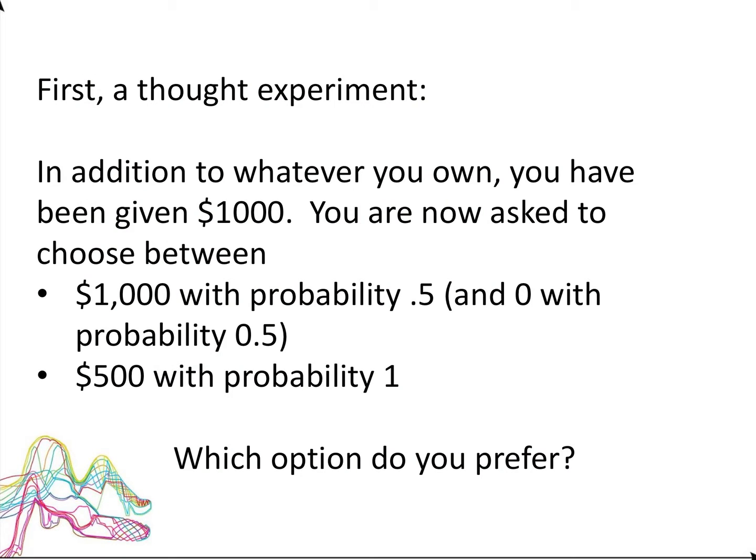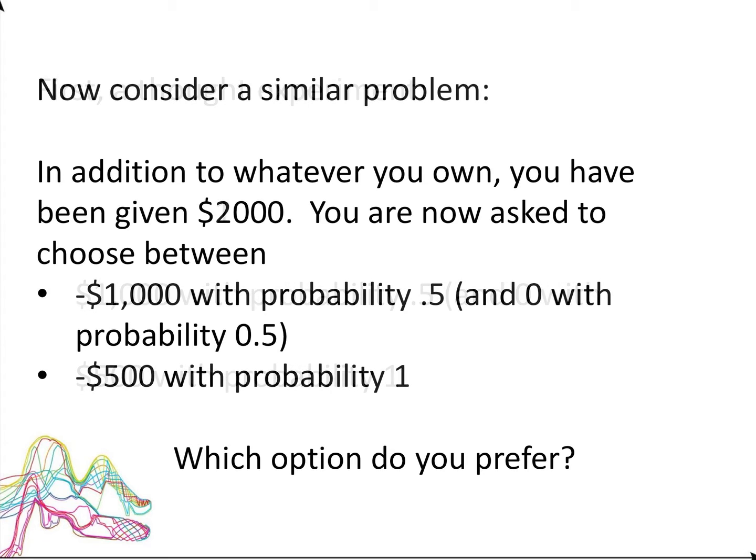Let's talk about the cornerstone of behavioral economics, coming out of a very simple thought experiment. Step one: I give you $1,000. Then I ask you — you have two options. One, we can flip a coin: if it comes up heads, I give you another $1,000; if tails, I don't give you anything else. Or I could just hand you another $500. Now a second thought experiment: I give you $2,000 and offer a choice again. I flip a coin — heads, I take $1,000 from you; tails, I take nothing. Or I take $500 from you for sure.